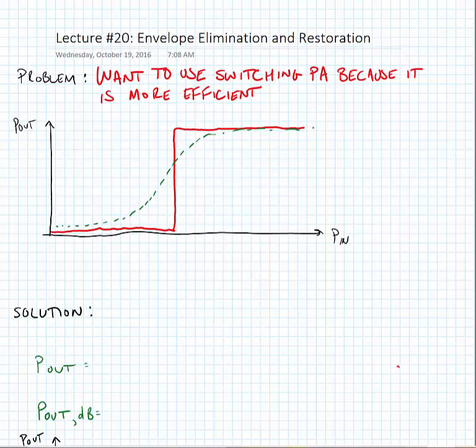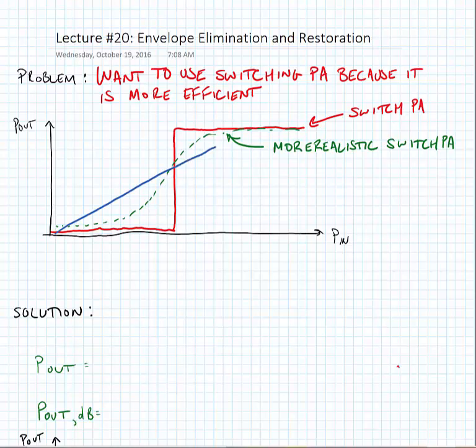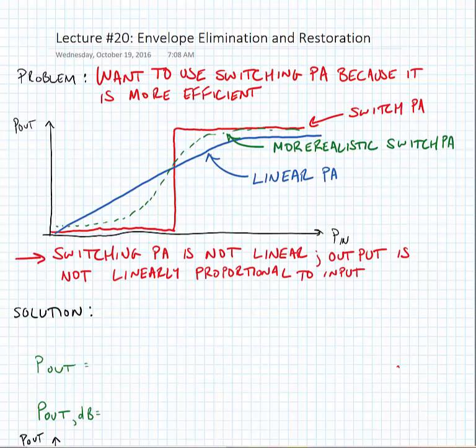More realistically, a switching amplifier might turn on slightly but it's still not very linear. Of course what we're really looking for is a linear PA response, something that looks like a linear output that maybe at some point starts to saturate. So the real challenge is our switching PA is not linear - the output is not linearly proportional to the input.